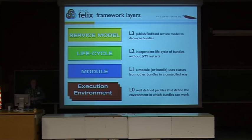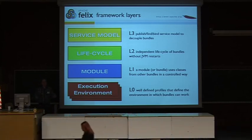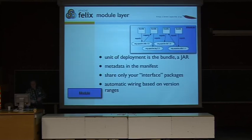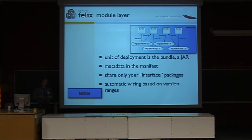The execution environment defines a couple of profiles. Some of you might have done Java embedded or Java on a mobile phone, where you have different profiles which define which subset of APIs are available — this is the same thing. You can have a very constrained profile that runs on an embedded device or a full-blown Java 6 desktop profile. On top of that is the module layer. The module, or bundle as it's called in OSGI, is the unit of deployment. Each bundle is just a JAR file — it can contain Java packages, native code, and other resources. The only difference from a normal JAR file is some extra metadata in the manifest.